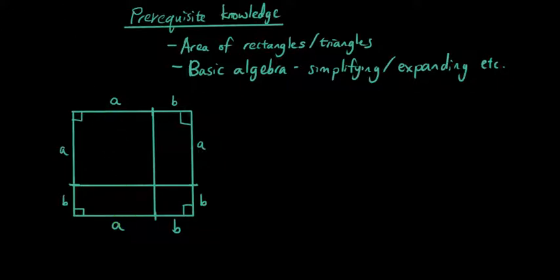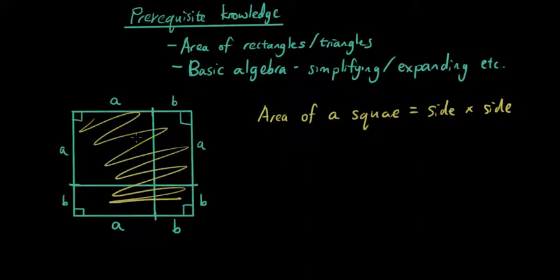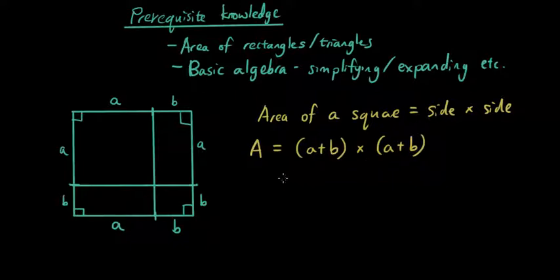Now let's look at equations for finding the area of this square. The area of a square is side times side. If we look at the area of this whole square, each side has the length A plus B. So therefore the area of this whole square is A plus B times A plus B, which is A plus B squared.